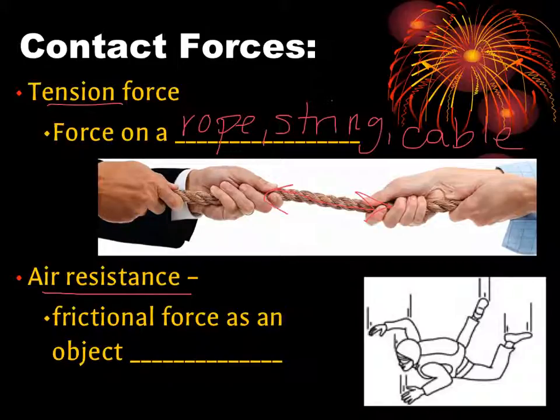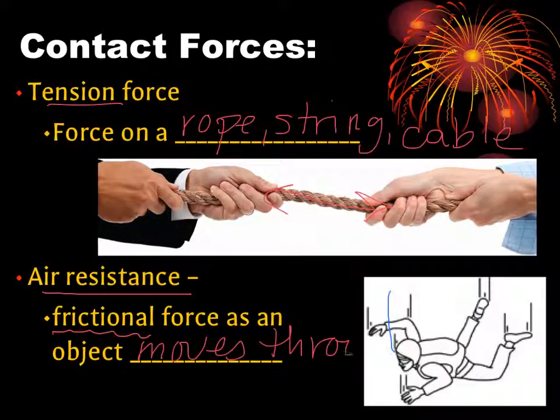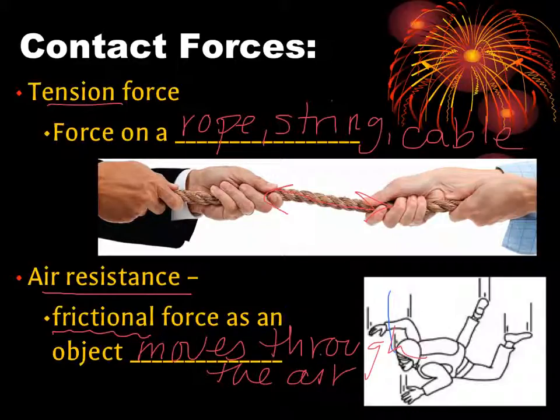Air resistance is another contact force. This is also a frictional force, but instead of happening with a surface, it's happening as an object falls through or moves through the air. Here, we have our skydiver. As he falls through the air, all these little air molecules are bumping and bombarding against his body, and therefore he has air resistance - friction with the air molecules around him.